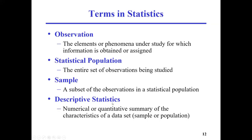Then we have descriptive statistics: a numerical or quantitative summary of the characteristics of a data set. This can be for a sample or for a population. For example, the average commuting time of the people interviewed — that's a descriptive statistic. The max value of commuting time in your experiment is another descriptive statistic. The mean value, the range, the median value — they are all descriptive statistics.